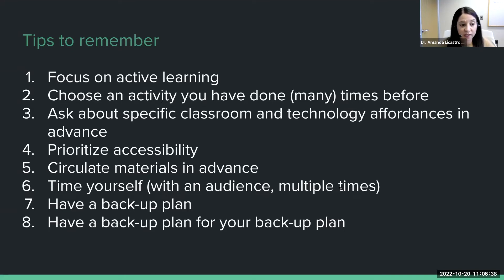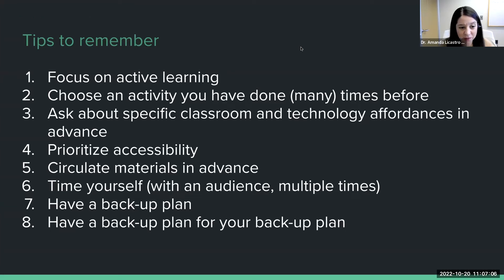Prioritize accessibility: circulate your materials in advance, make sure videos are captioned, and ensure images have alt text. Ask about any accommodations in the class so you can provide high contrast for those who are colorblind or sans-serif fonts for those with dyslexia. Think about accessibility in advance, time yourself with an audience multiple times to make sure you fit within your time frame, and absolutely have a backup plan in case everything fails — it's Murphy's Law.